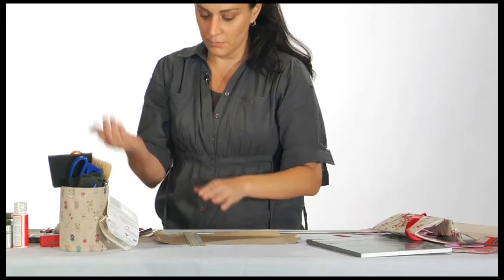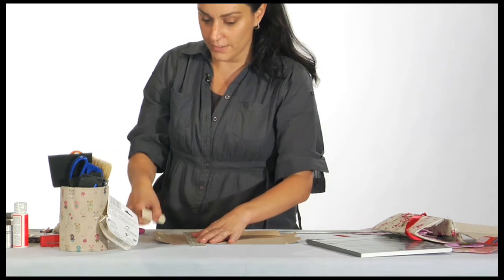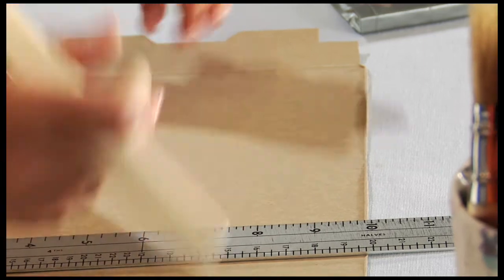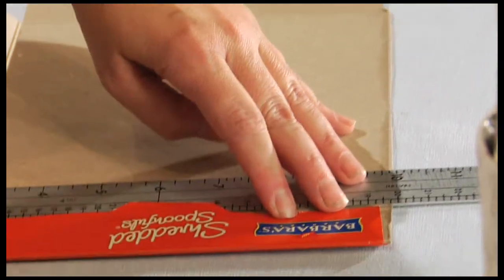Whichever way you want to score something, you have to score it on the opposite side, which is from the side that's folding. So in this case, this is going to be the outside and the inside is going to be the front of the box.